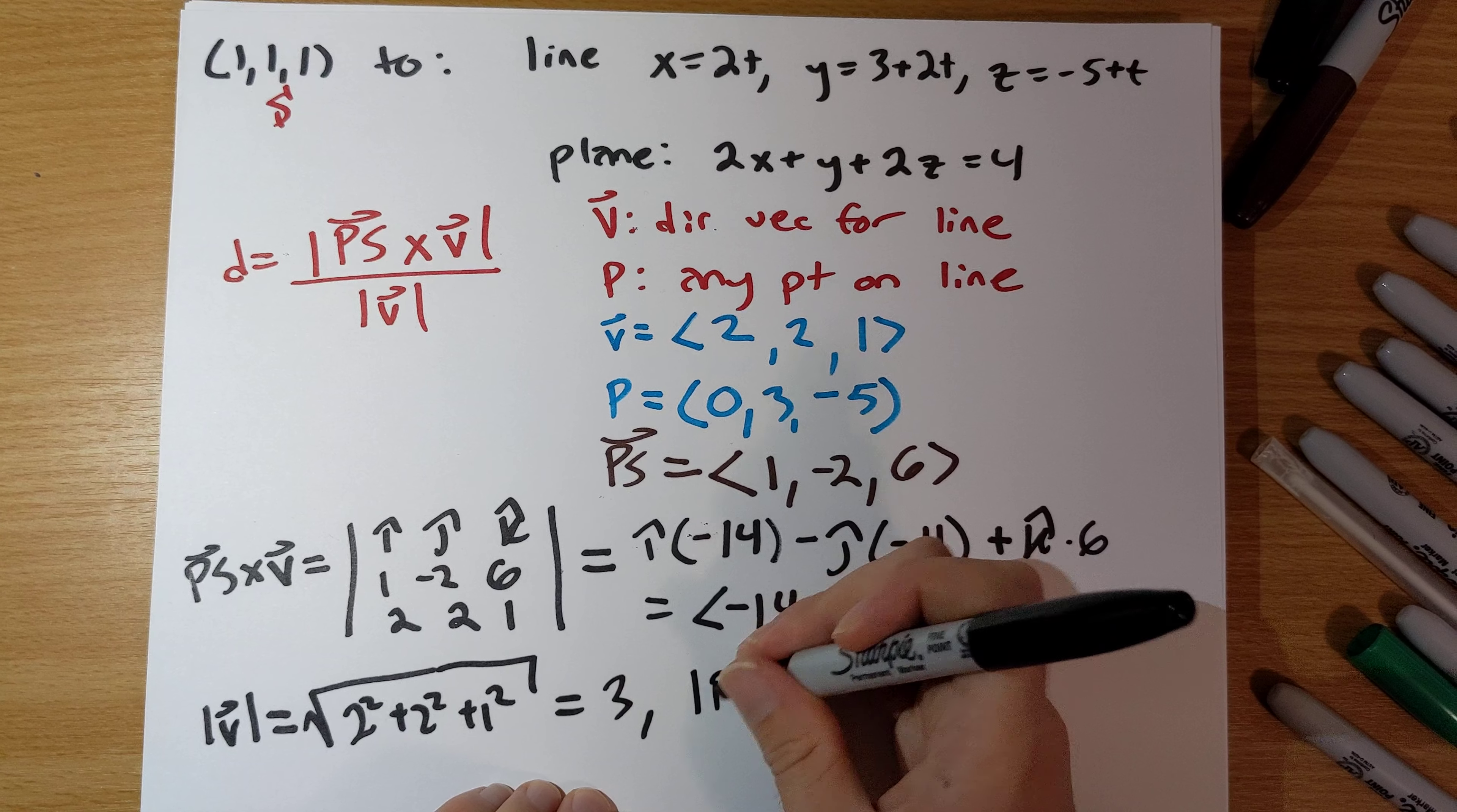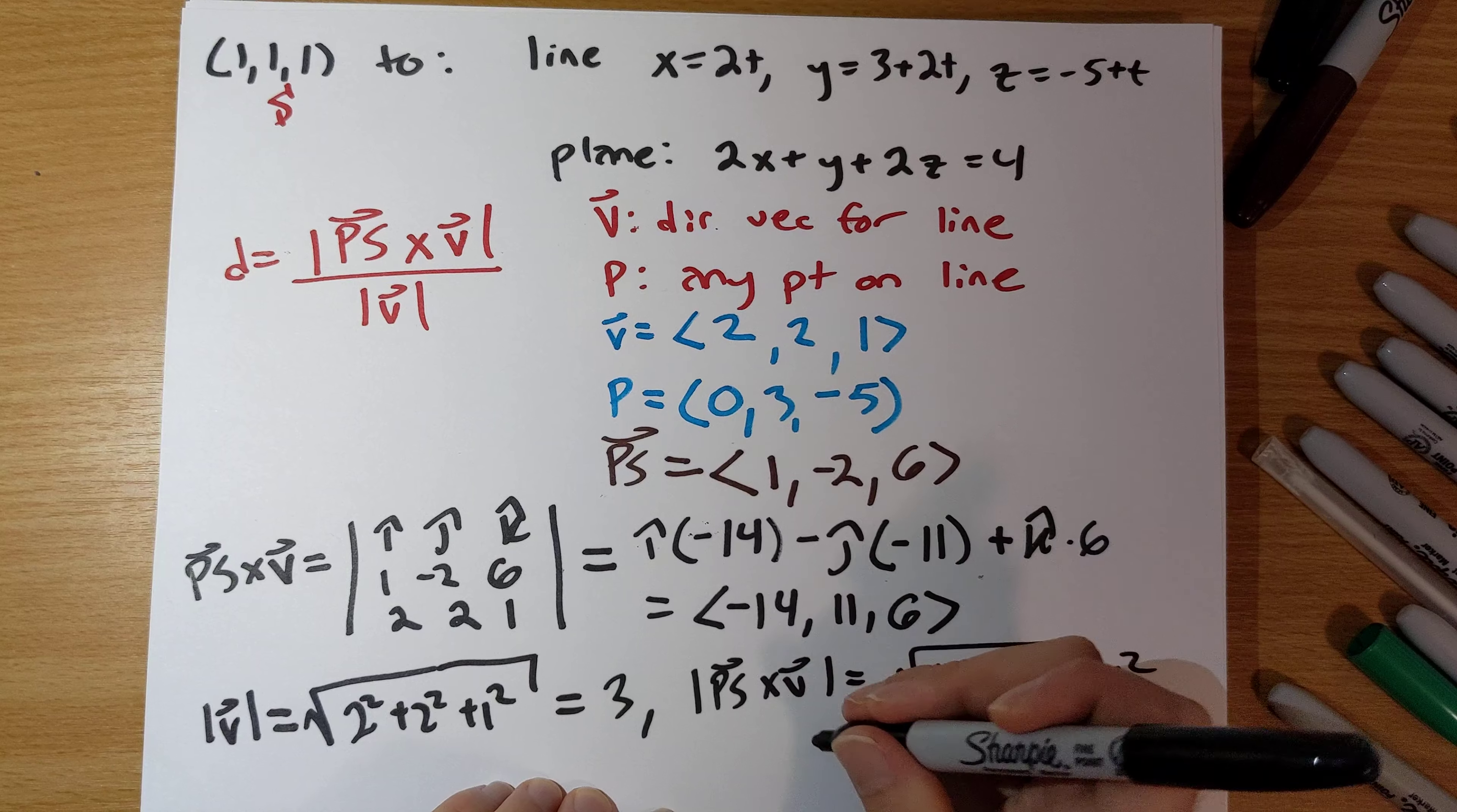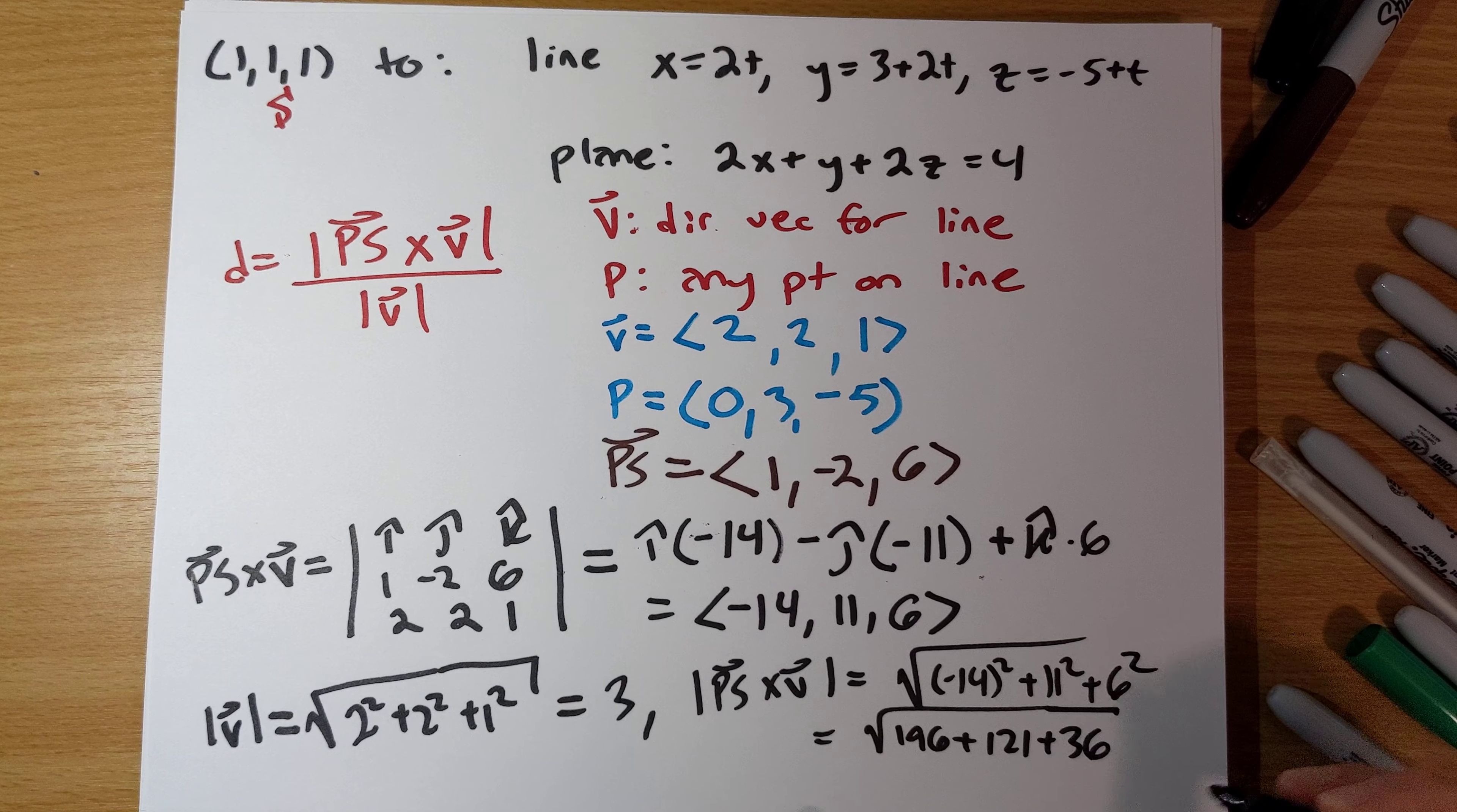And the magnitude of the cross product is going to be square root of negative 14 squared plus 11 squared plus 6 squared. That is going to be, what, 196 plus 121 plus 36. That is going to be, let's see here.